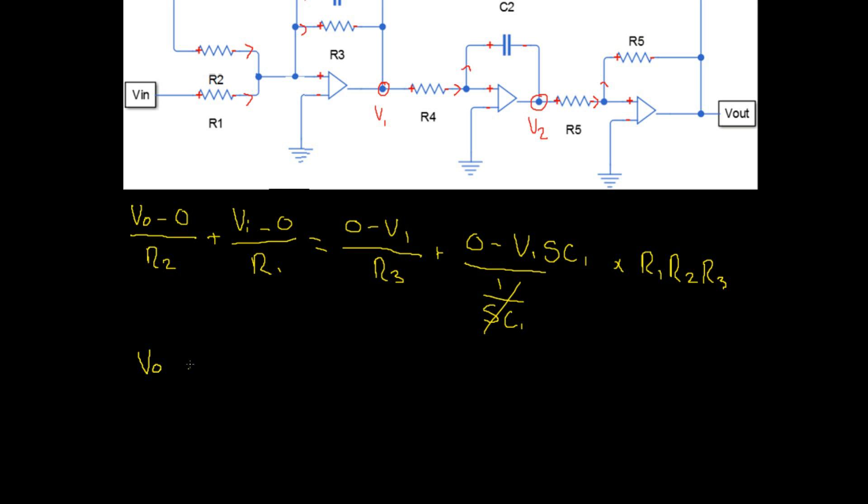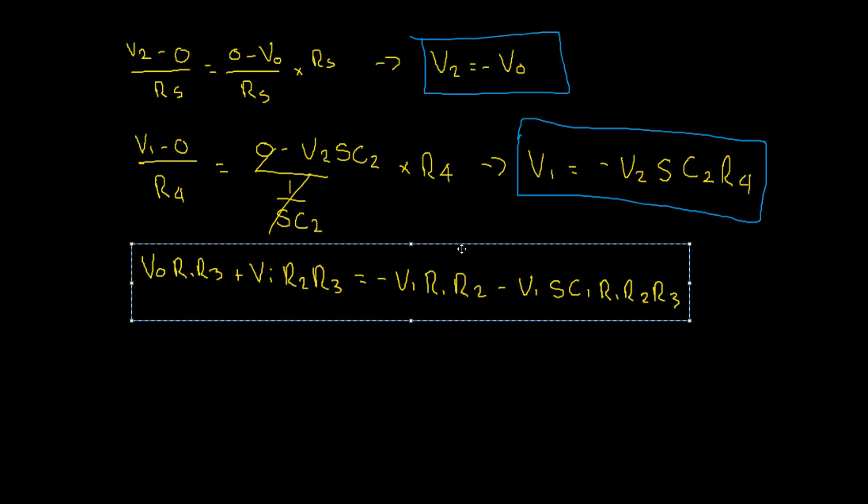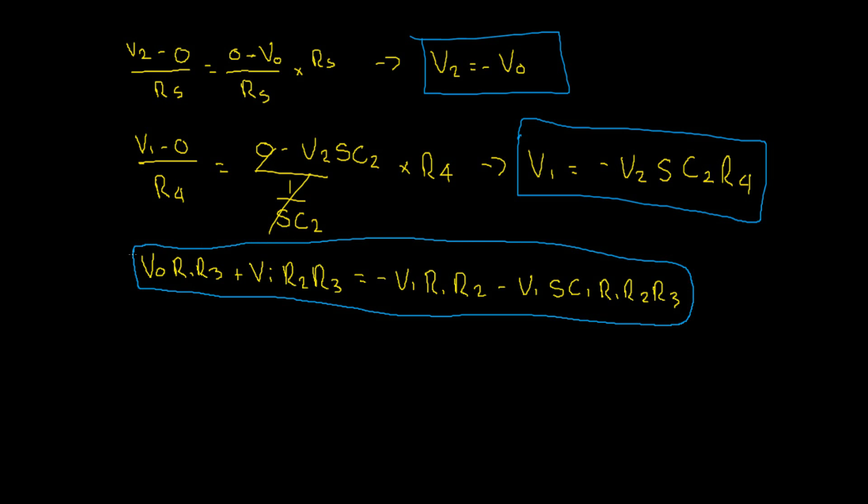This gives us VO, the R2's cancel, we're left with R1, R3, plus VI, the R1's cancel and we're left with R2, R3, equals negative V1 SC1 R1 R2 R3 minus V1 R1 R2. So there we have it. We now have three equations in which we can relate to one another to find V out divided by V in.